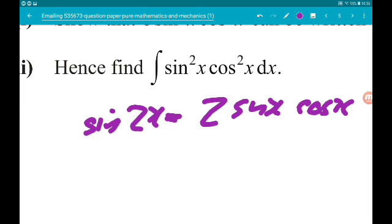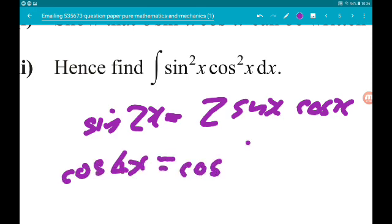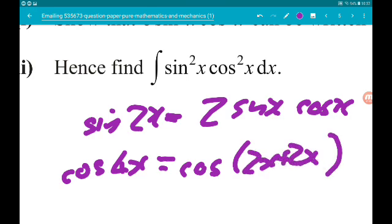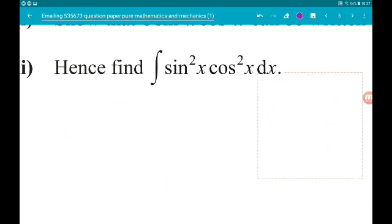And we're also going to need to think of cos 4x as cos of 2x add 2x, and then we're going to use the compound angle formulas. Okay, so with that in mind, let's go.